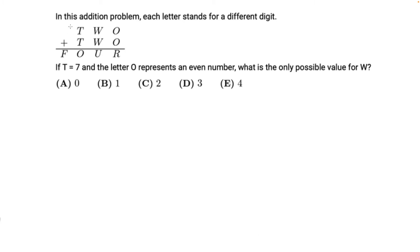So first we know that T is 7. We can write 7 in place for the T. So if we write 7 as the T's, 7 plus 7 is 14. So we write a 1 here as O and 1 into F.